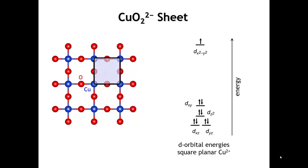We're going to take this two-dimensional sheet that has a copper 2+ ion surrounded by four oxygens in a square planar environment. The unit cell of our two-dimensional structure is just this square with copper ions at the corners and oxygen at the middle of each edge. Over on the right, I show the MO diagram for a copper 2+ ion in a square plane of ligands like oxygen.